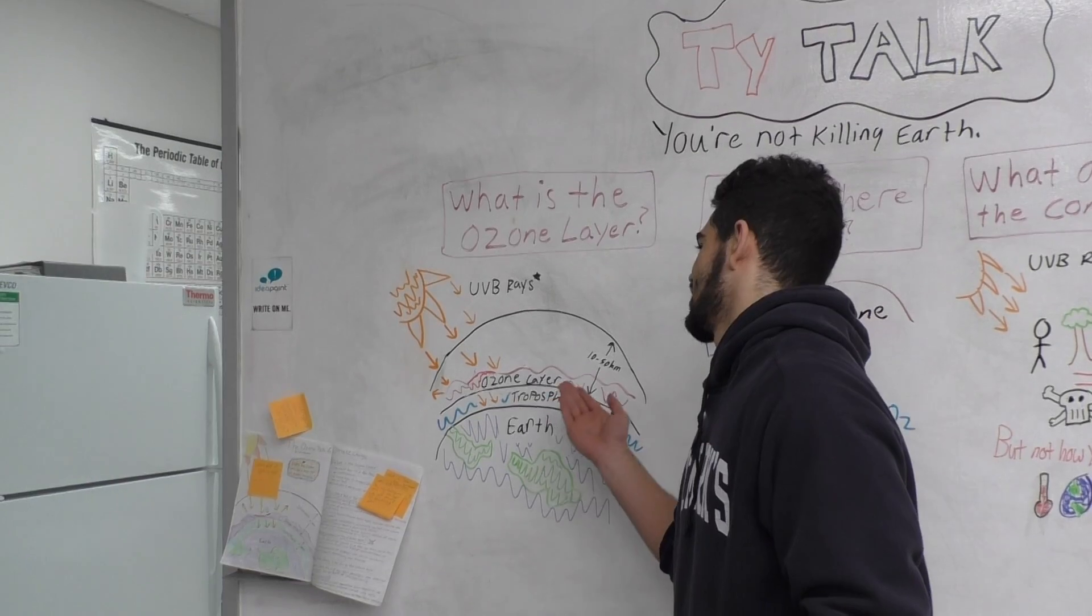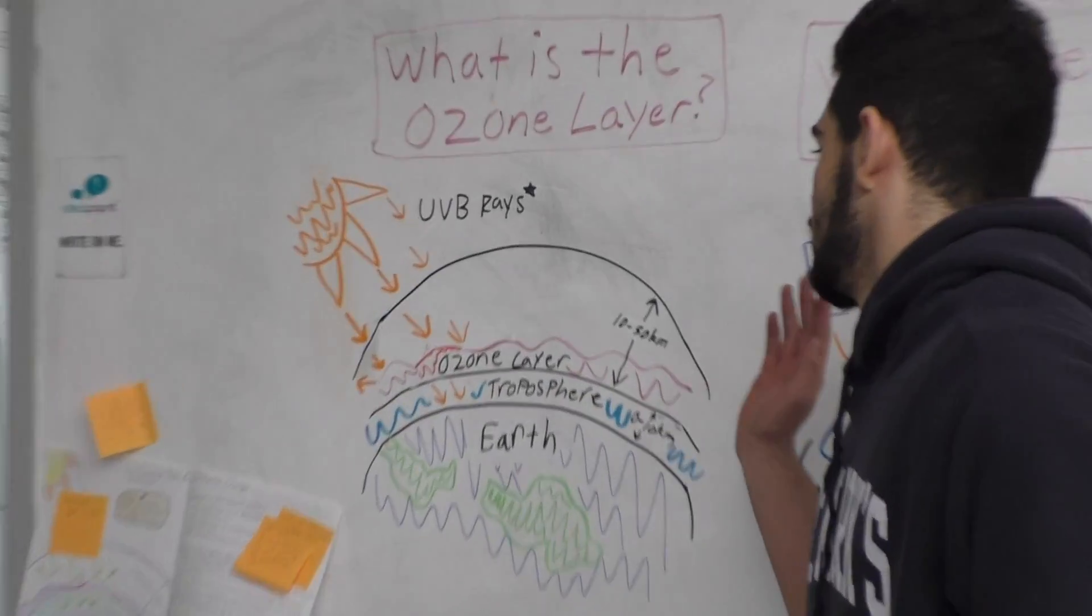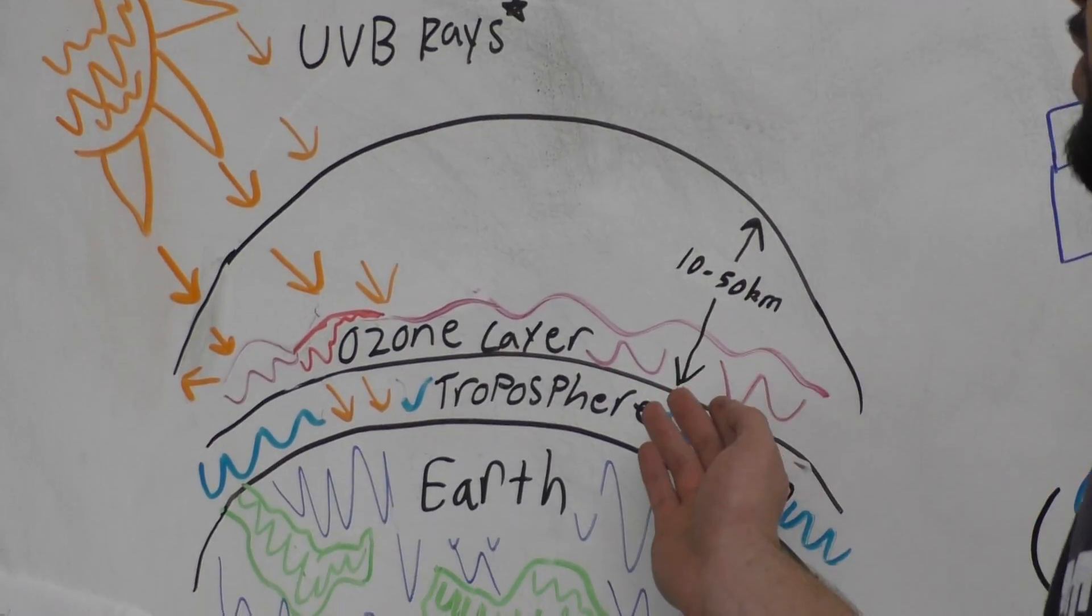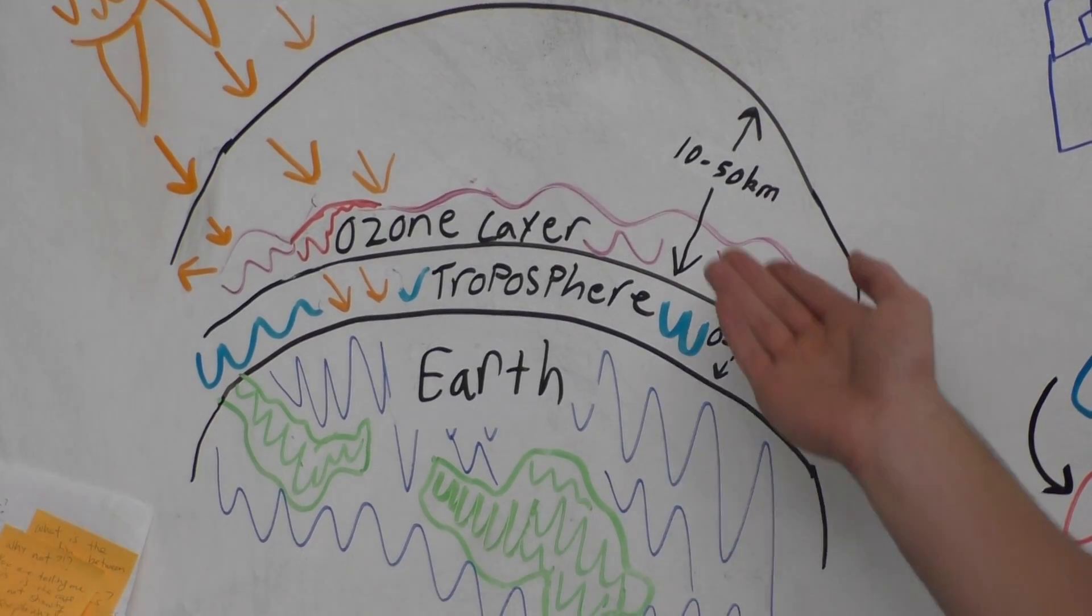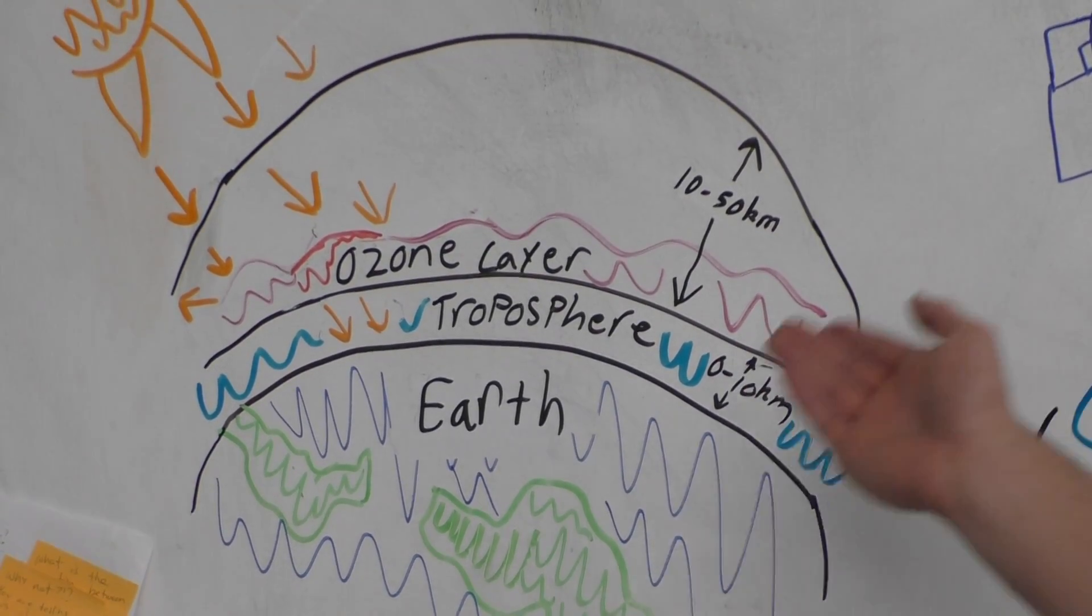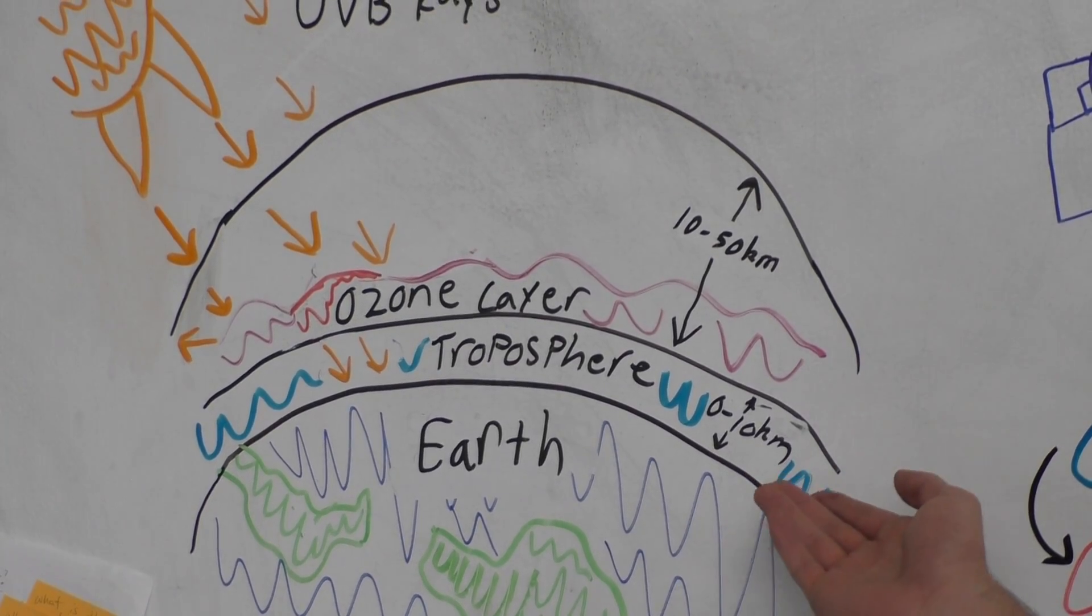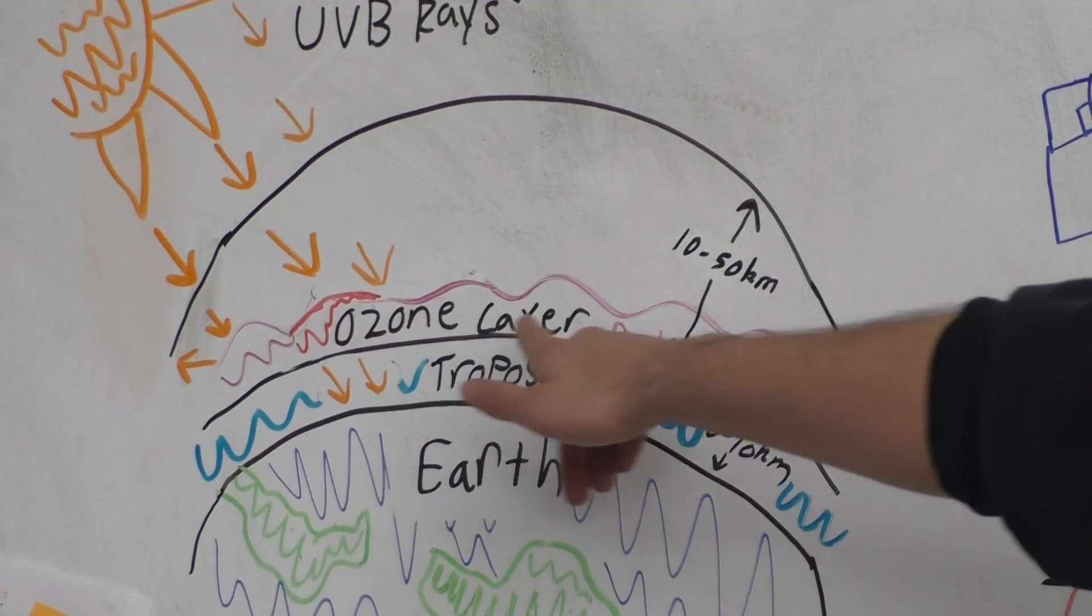The ozone layer is located inside our atmosphere within the stratosphere, which is 10 to 50 kilometers in the air, right above the troposphere, which is about 10 kilometers up. You see here this thin layer.